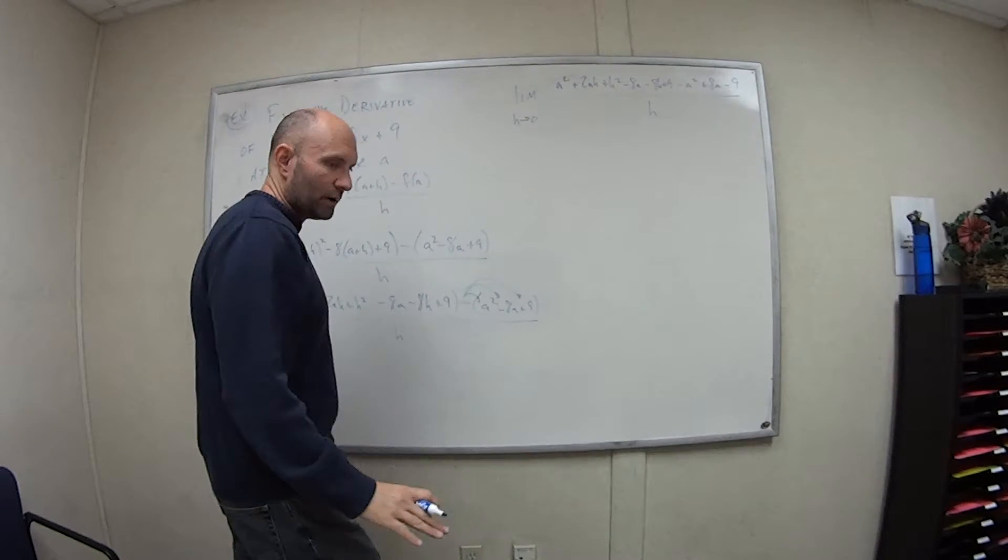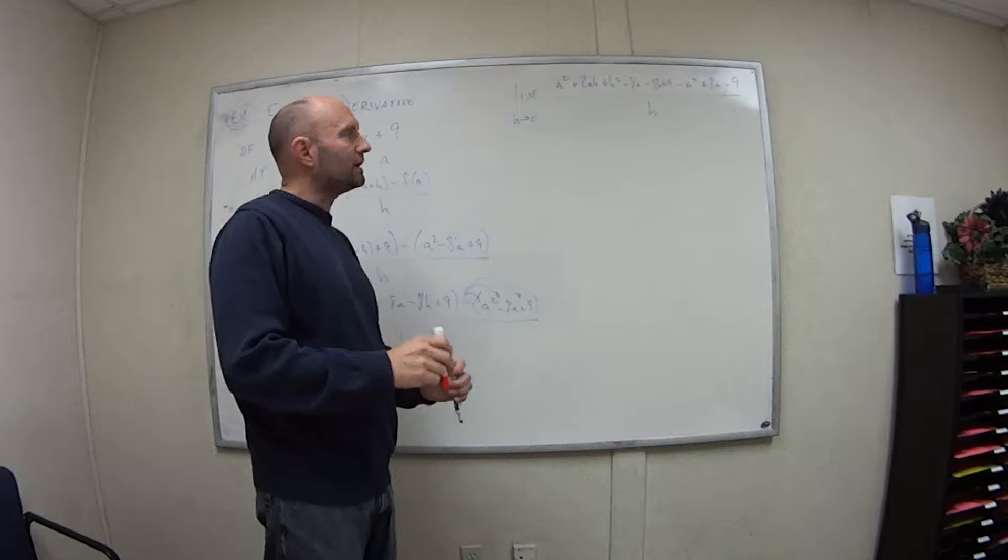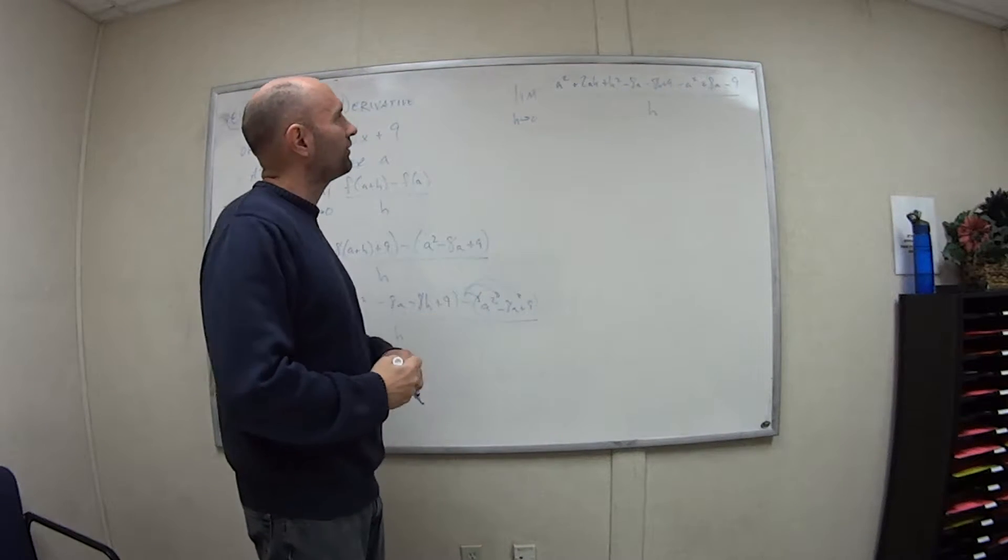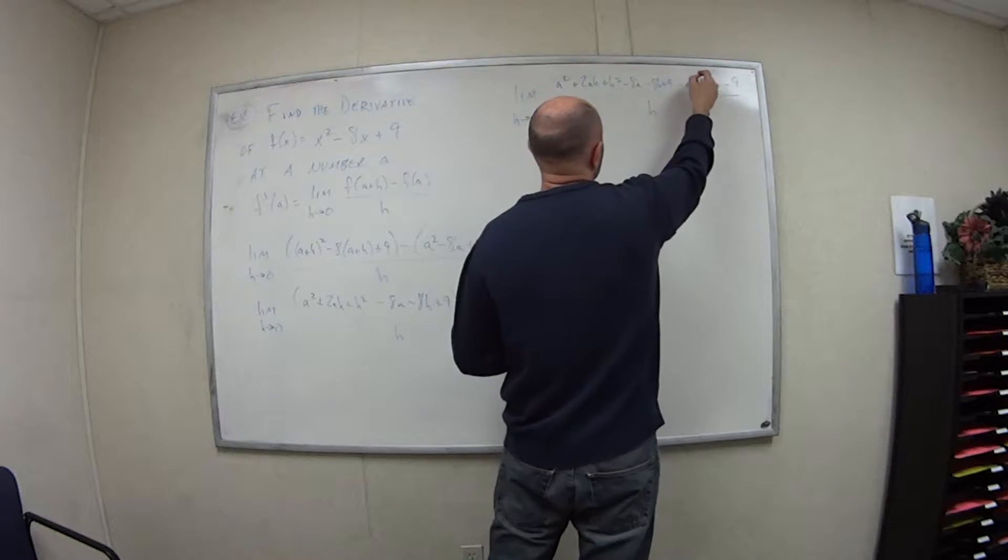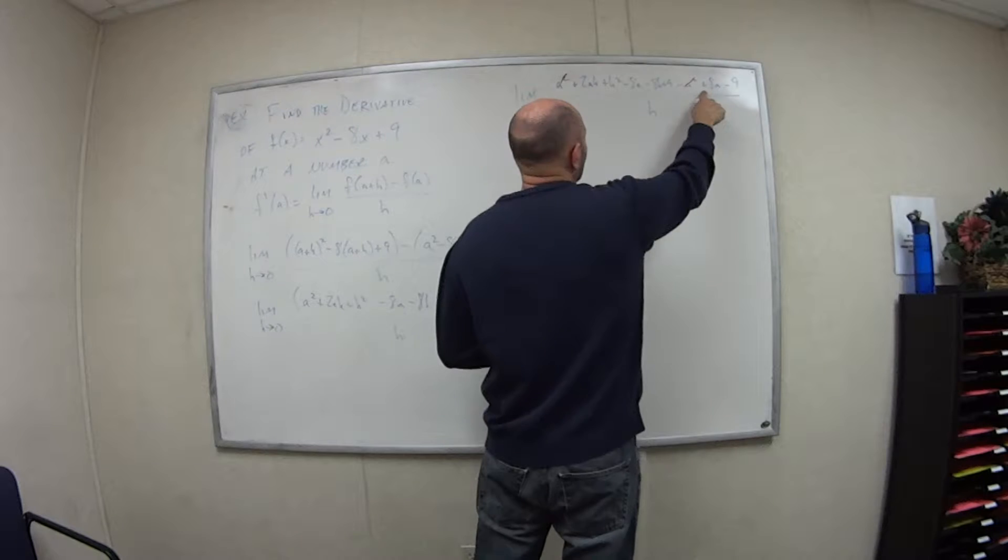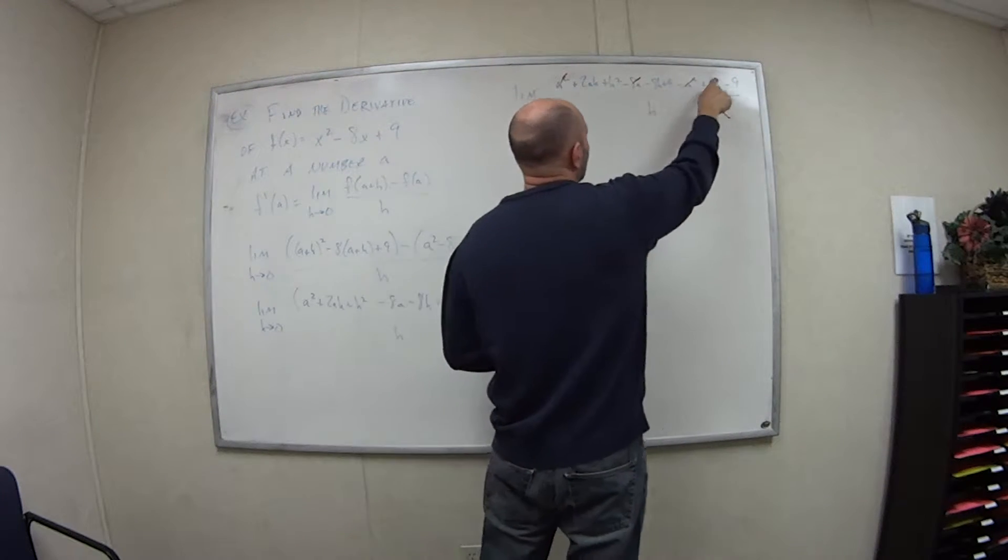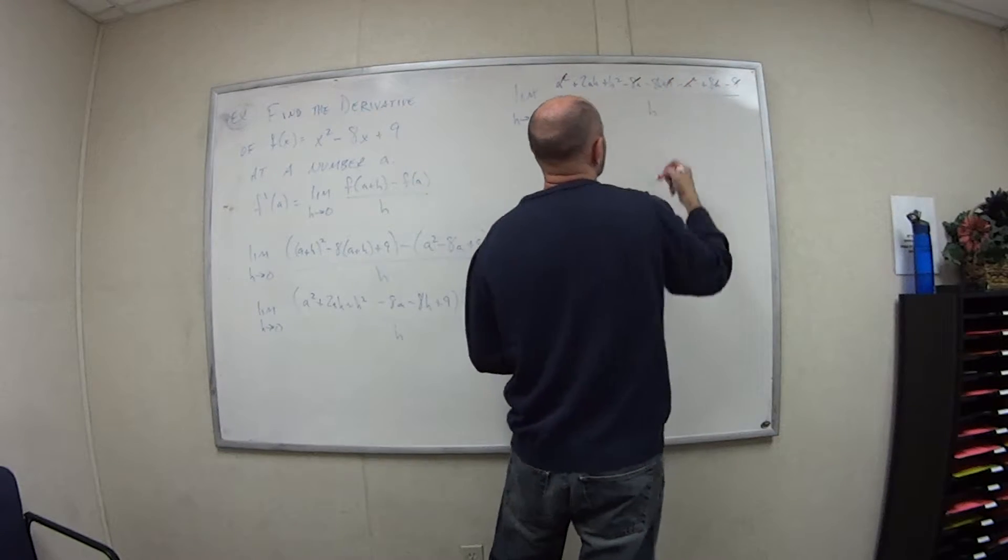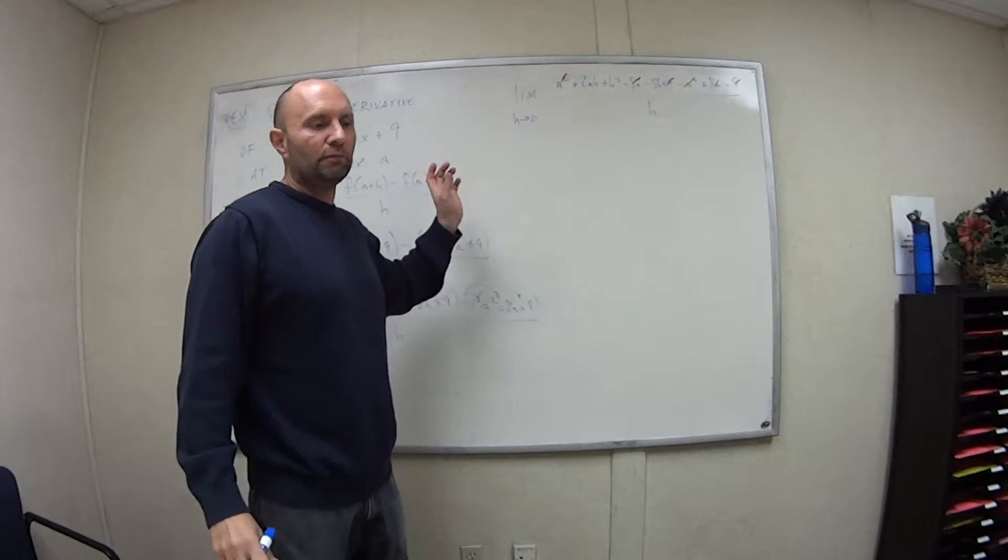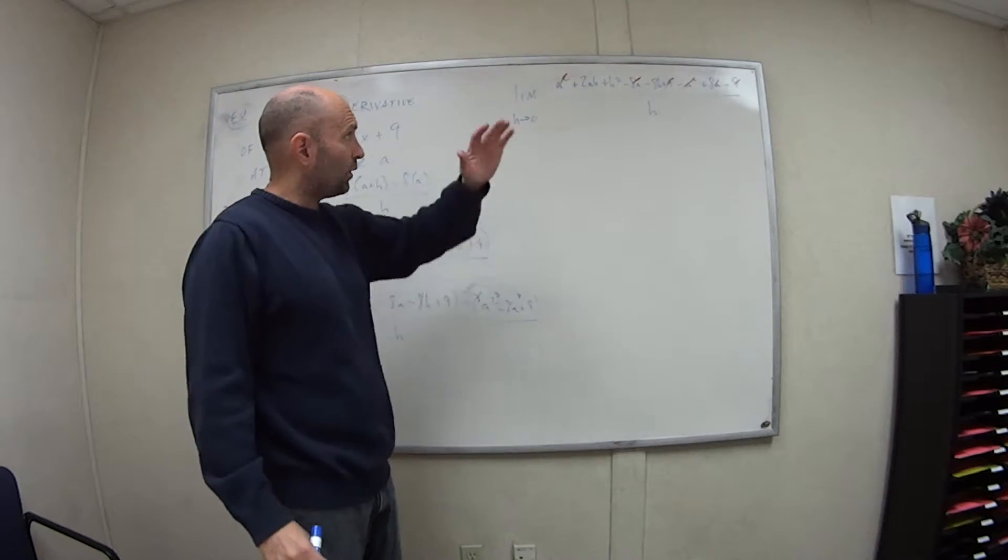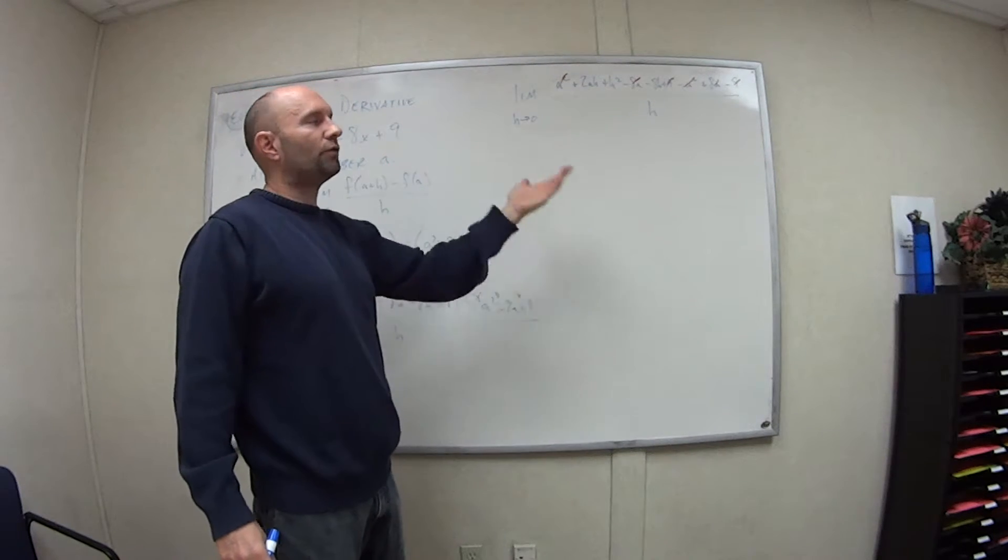So now let's see what happens here. And this is what should happen. If you've done your algebra correctly at this point, you should be able to start canceling out a bunch of stuff. So we have a squared minus a squared, those cancel. Plus 8a minus 8a, those cancel. Plus 9 minus 9, those cancel. So if you're not able to do that, go back and check your work because you might have messed up a sign somewhere. Because those three pieces, this minus f of a, should cancel out with some other pieces.